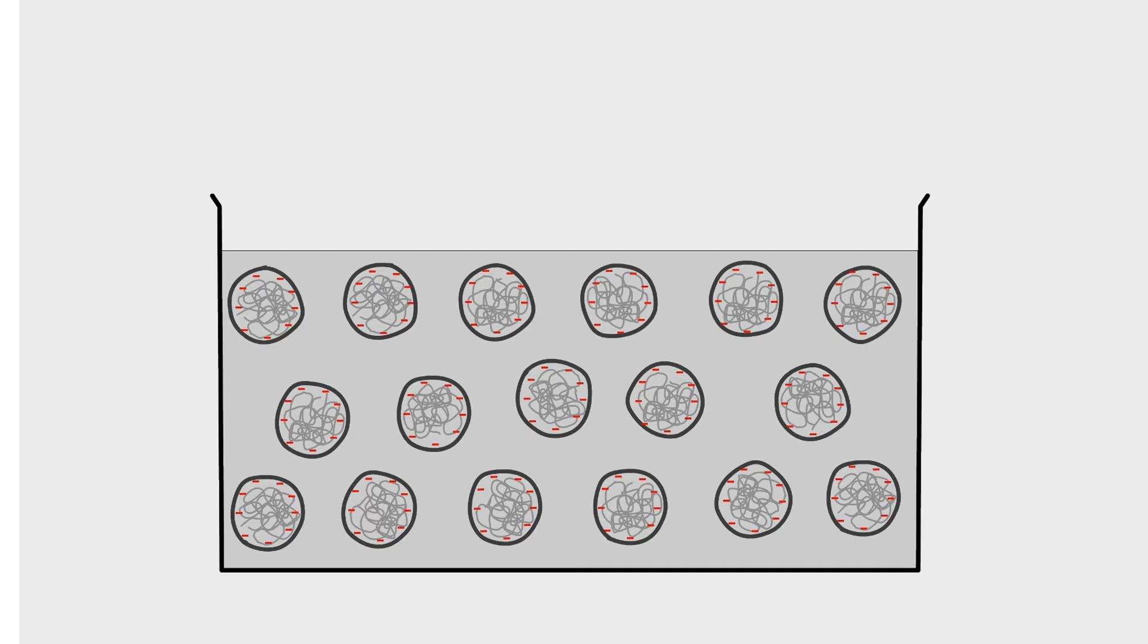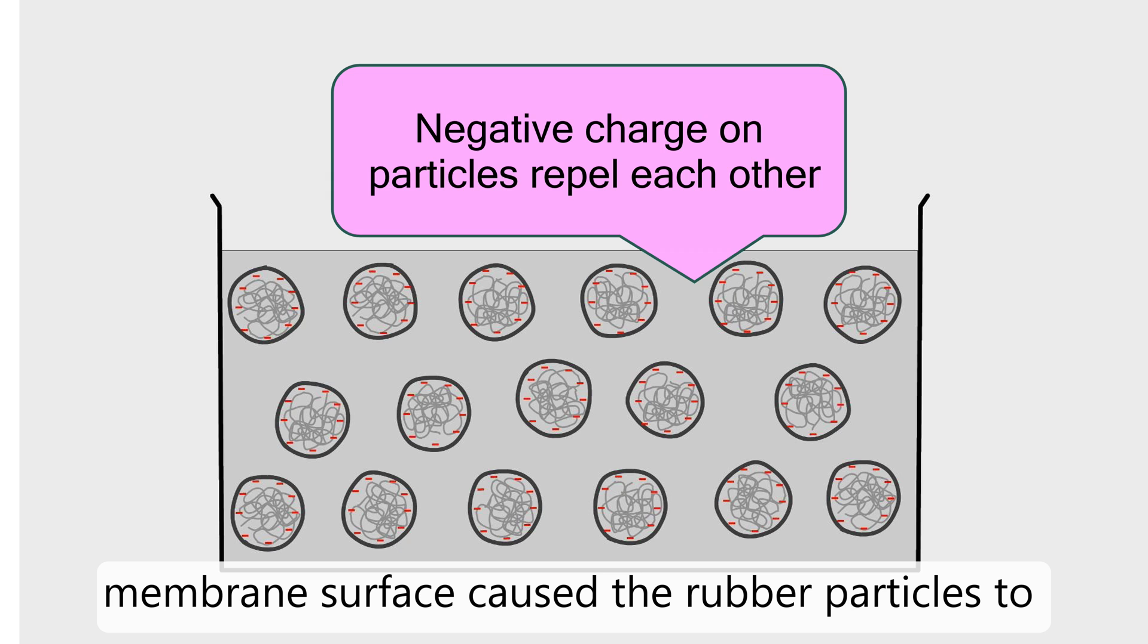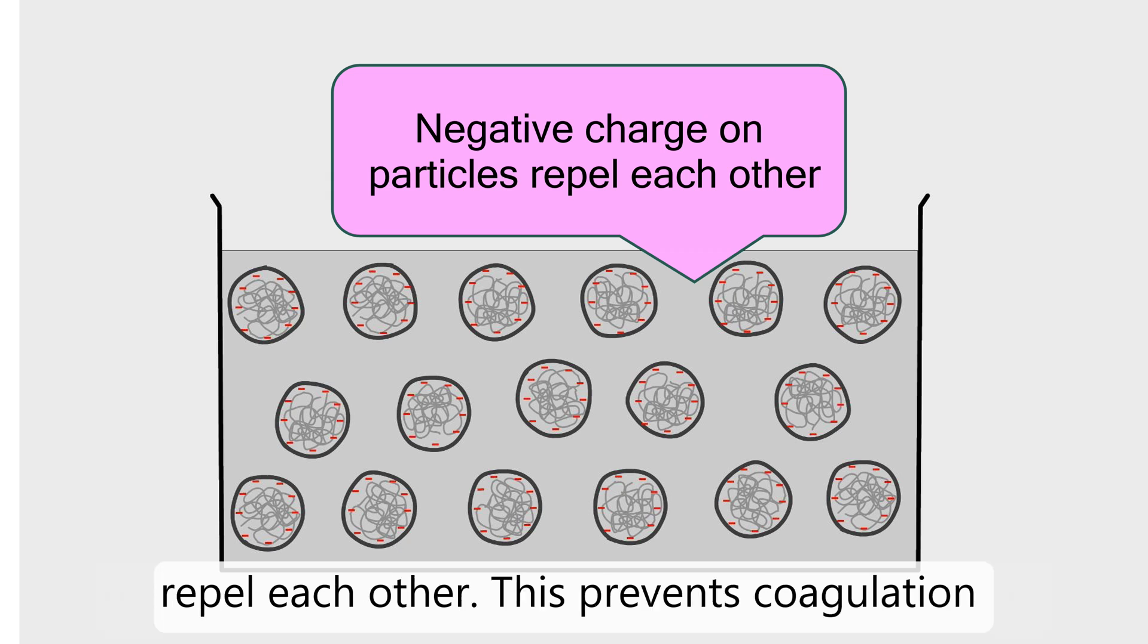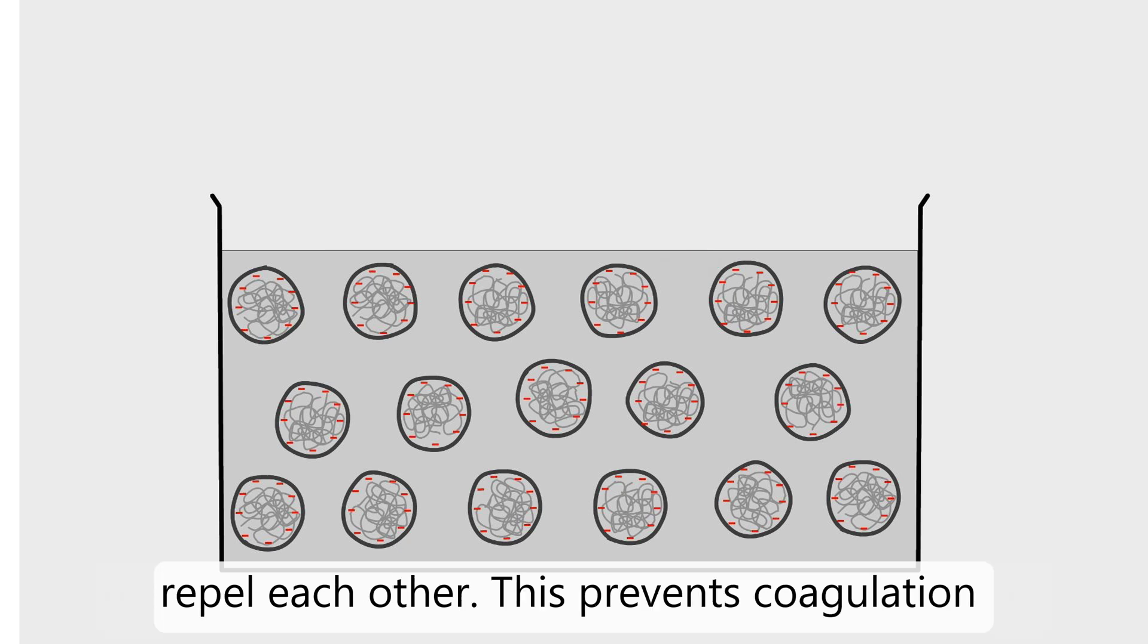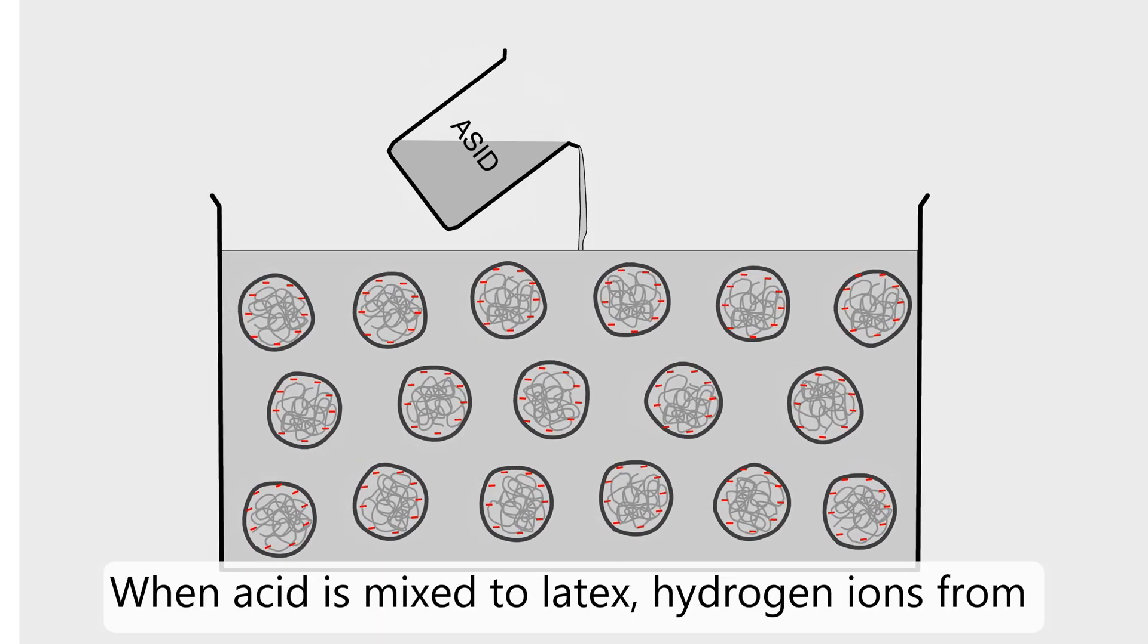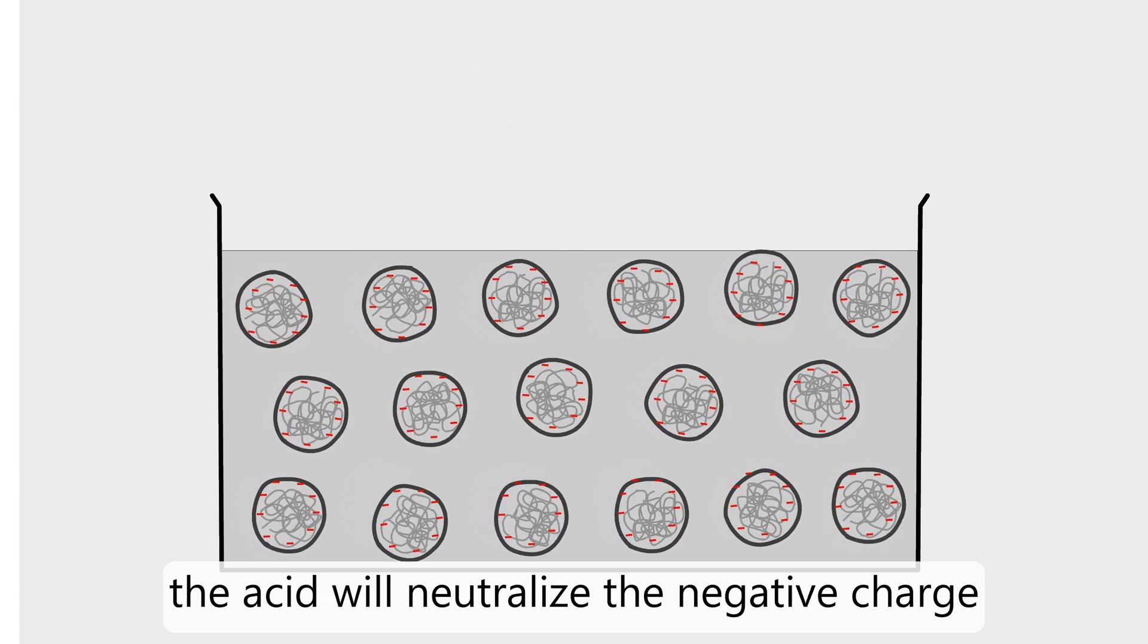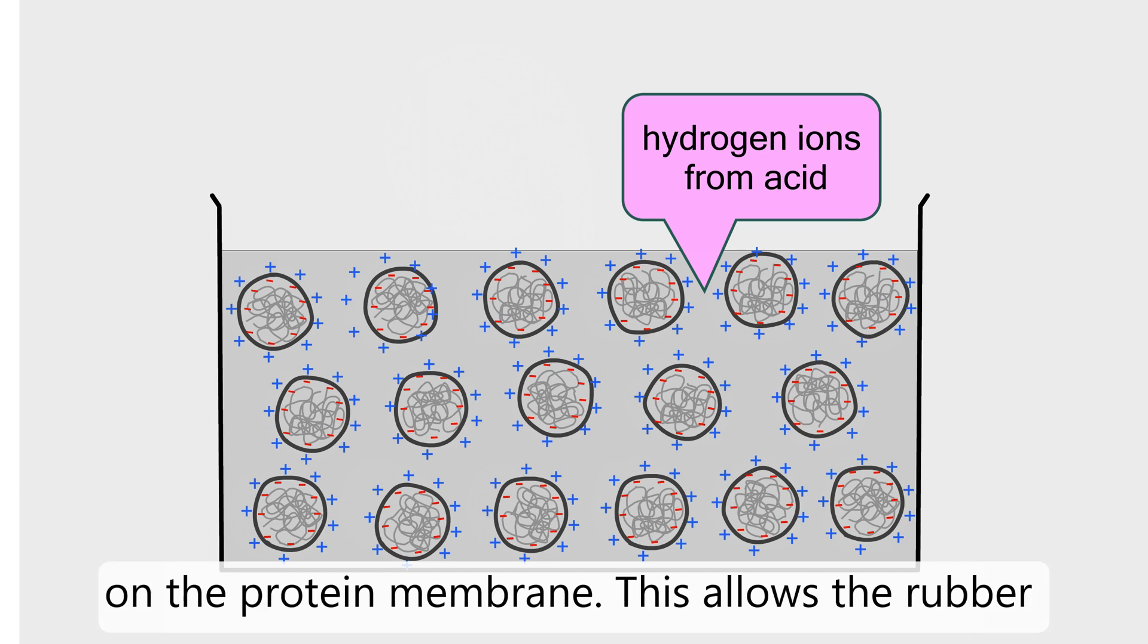Coagulation of latex: Originally, the negative charge on the membrane surface caused the rubber particles to repel each other, preventing coagulation from occurring. When acid is mixed to latex, hydrogen ions from the acid will neutralize the negative charge.